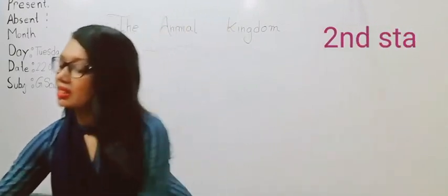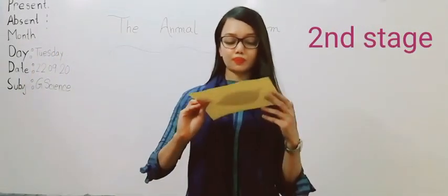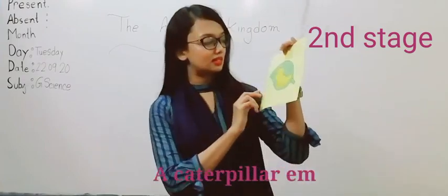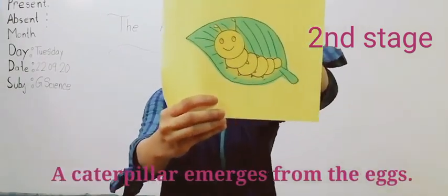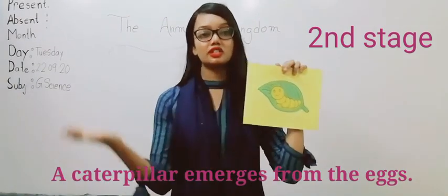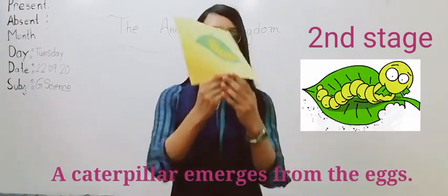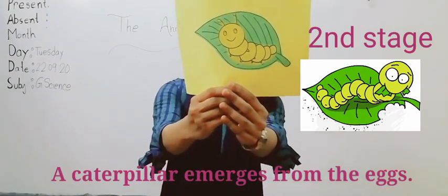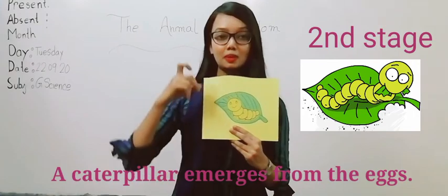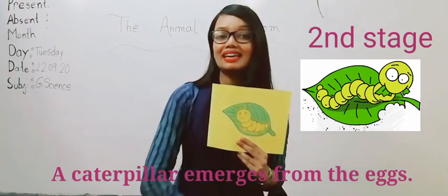Now the second stage. The second stage - eggs hatch into caterpillars. The caterpillars emerge from the eggs. So the second stage, the caterpillar comes out from the egg, and the picture of caterpillar is this.